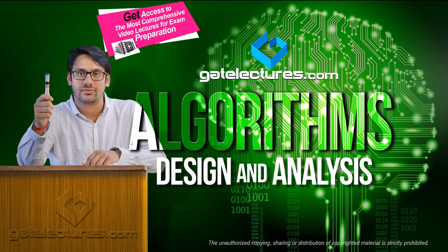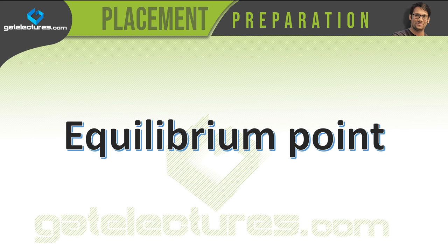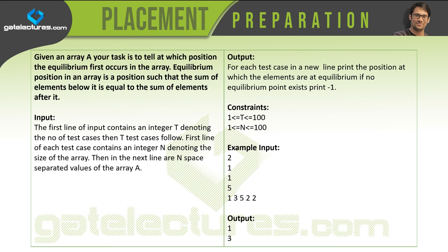Let us look at the next problem here, which is called the equilibrium point problem. The problem is easy because we are initially discussing easy problems so that we can build a simple base to solve difficult problems. Given an array A, your task is to tell at which position the equilibrium first occurs. An equilibrium position is a position such that the sum of elements below it is equal to the sum of elements after it.